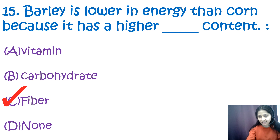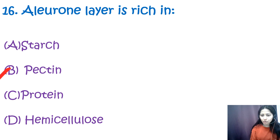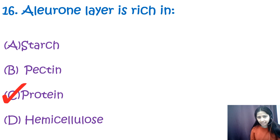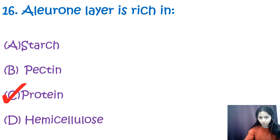Question 16: The aleurone layer is rich in — starch, pectin, protein, or hemicellulose? The correct option is C — protein. The aleurone layer is the outermost layer of the endosperm in cereal grains. It is rich in protein, contributing approximately 30% of the kernel's protein, with aleurone cells filled with protein bodies.